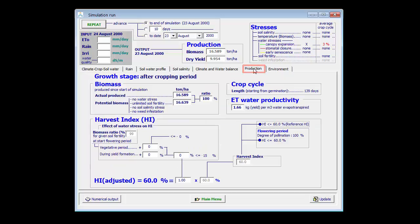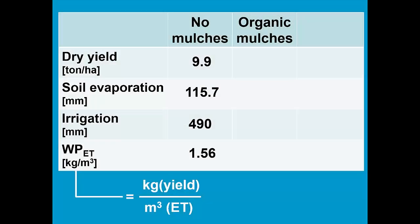Since I have the same yield, but with less evapotranspiration, the ET water productivity is higher. Thanks to the application of organic mulches, the yield remains the same, but the evaporation reduces to 76.3, and as a consequence, we have to apply less water, 455. Since the yield remains the same but soil evaporation reduces, then the water productivity will increase to 1.66.